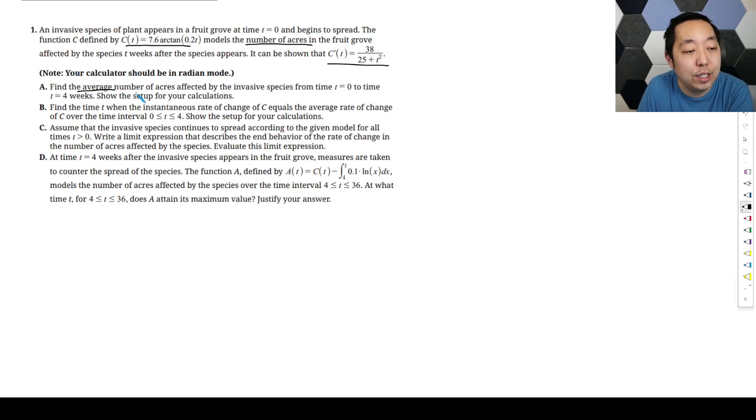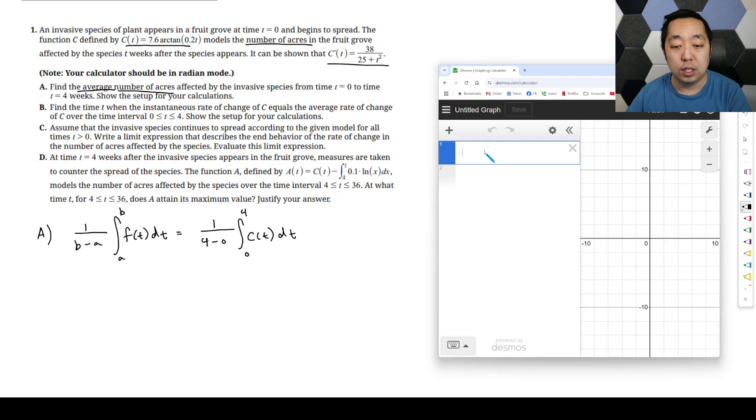Find the average number of acres affected by the species. So how do we do average value? It's 1 over B minus A, the integral from A to B of whatever you are finding the average value of. We are finding the average value number of acres. What's the number of acres? C of T. So that's going to be 1 over the interval width is 4 minus 0, integral from 0 to 4 of C of T, DT. And then we'll go to Desmos.